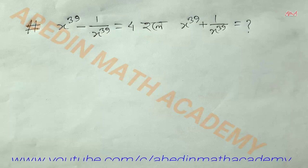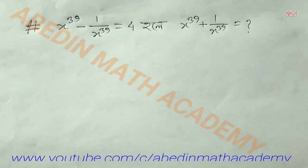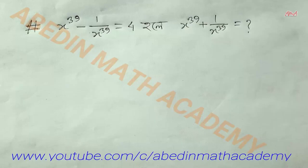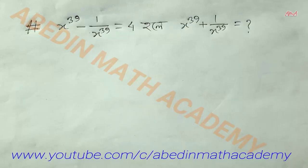Today's problem: x to the power 39 minus 1 by x to the power 39 is equal to 4. We need to find x to the power 39 plus 1 by x to the power 39, which is equal to some value k.